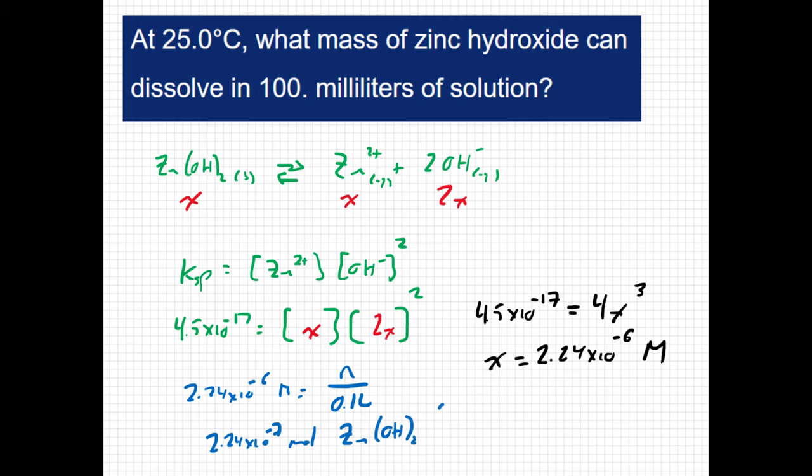Now I can convert that to grams, because I know the molar mass of zinc hydroxide is 99.42 grams for every 1 mole. I get 2.23 times 10 to the negative 5 grams.